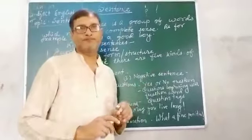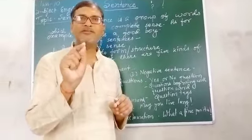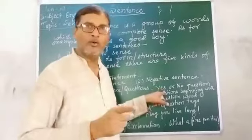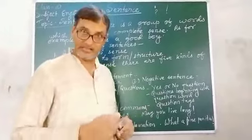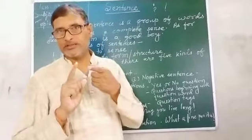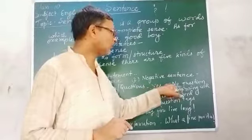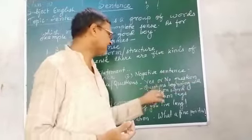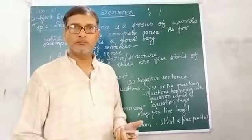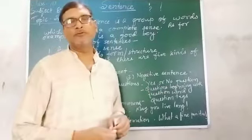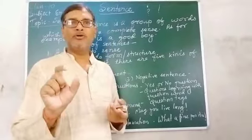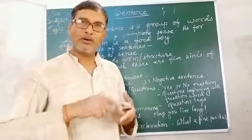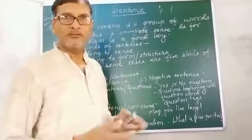There are three kinds of interrogative sentences. First is the yes or no question. For example: Are you ready? If you are prepared you can say yes, and if not you can say no. Second is the question beginning with question words. For example: What are you doing? The answer requires a full sentence. What are you teaching? I am teaching English grammar.